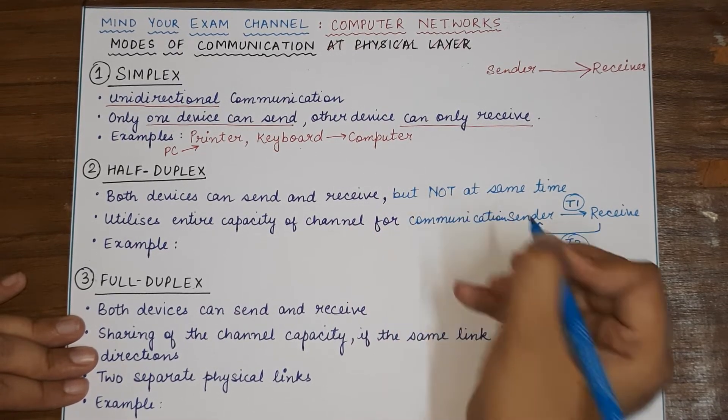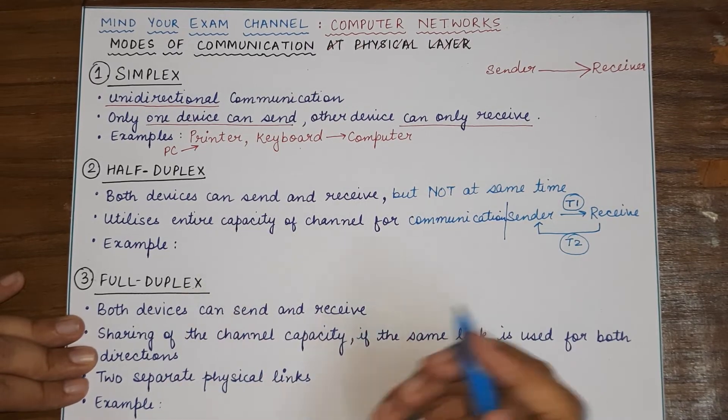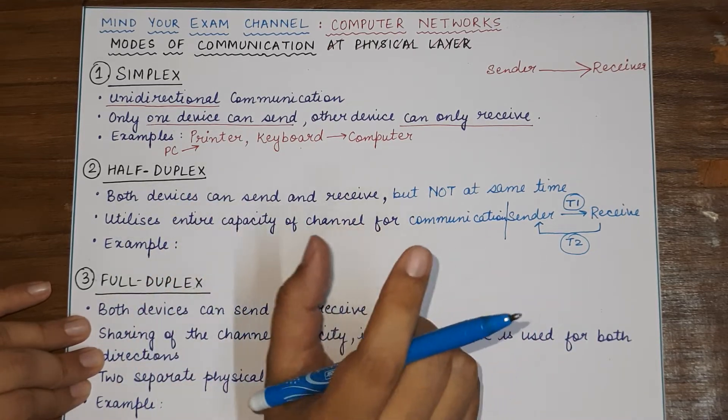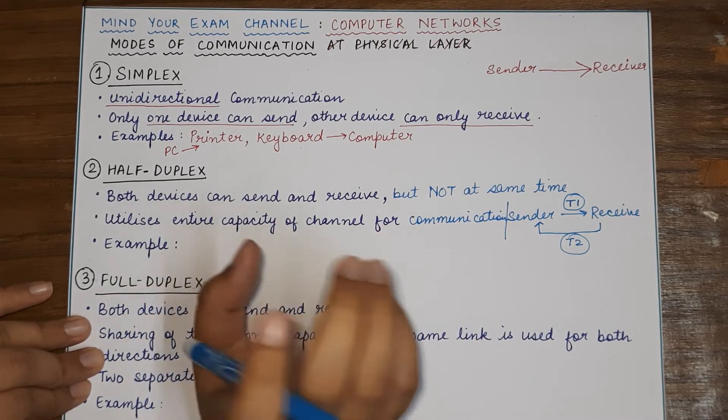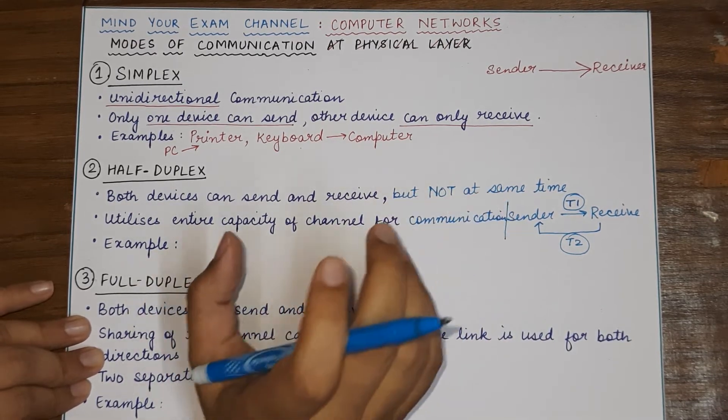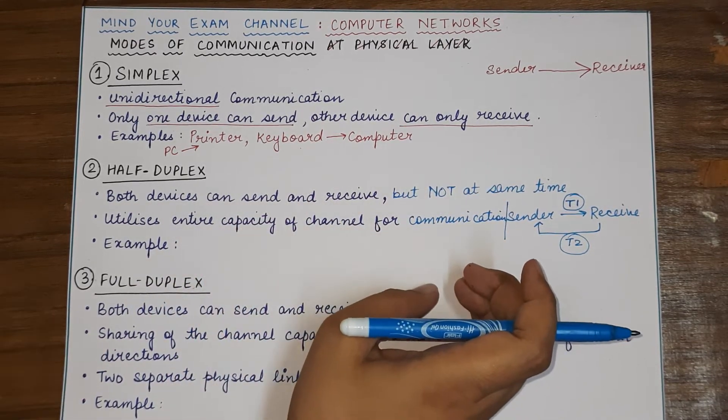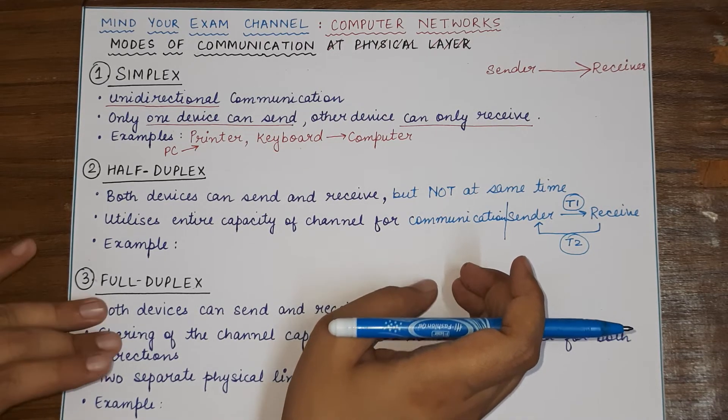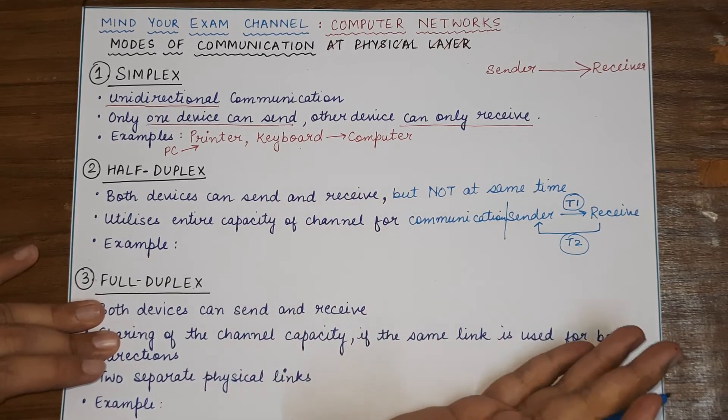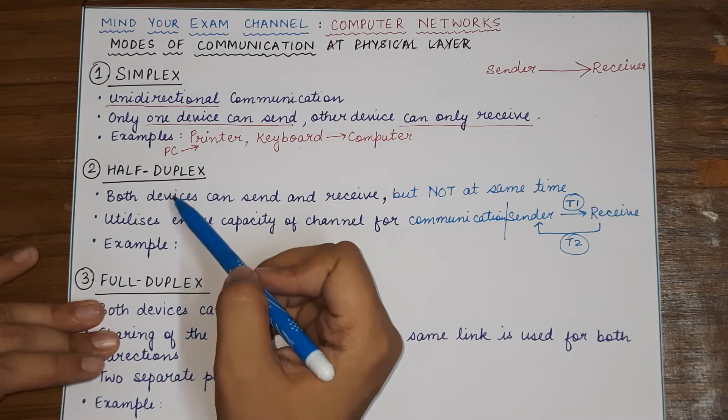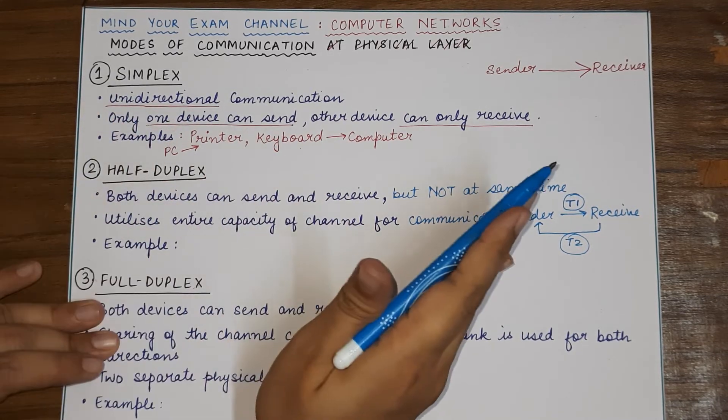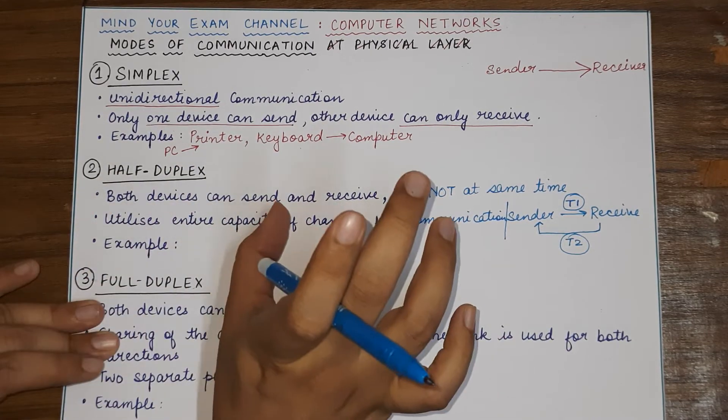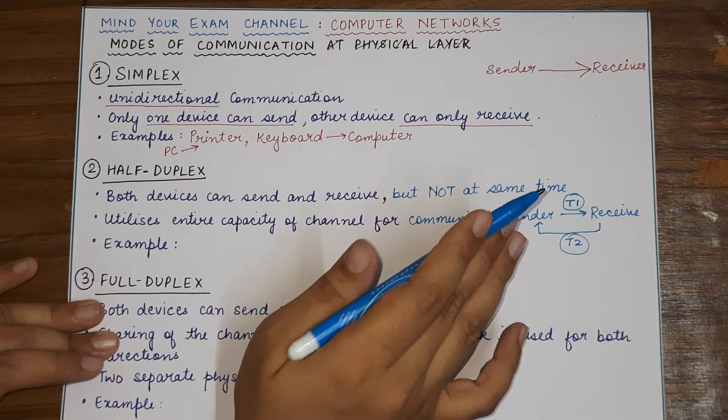So, basically, we studied that whenever we have a communication, a transmission link is involved. So, there is a capacity. Each transmission link has a capacity at which data can be transmitted. So, that capacity, the amount of data that can be transferred through that transmission link is called its capacity. Now, if in simplex and half-duplex, data is only traveling in one direction at a point, then all the capacity of that channel is being utilized.